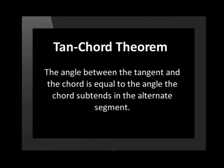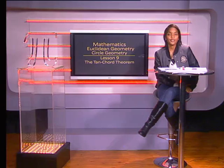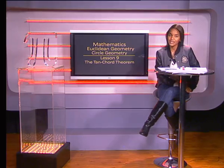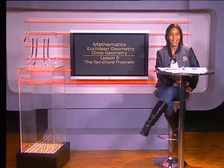The angle between the tangent and the chord is equal to the angle which the chord subtends in the alternate segment. Remember that you can be asked to prove the tan chord theorem, so make sure you know it well. You can find questions in the task video to help you practice these skills, and you will also be able to learn more about circle geometry on our website: www.mindset.co.za/learn. Thank you for joining us, Grade 11s.